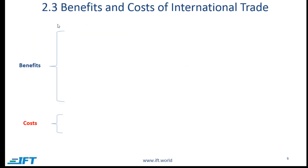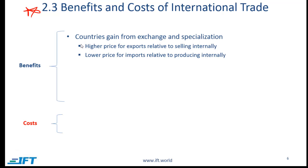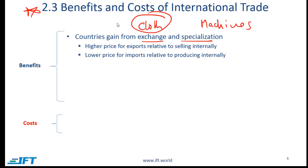Moving to section 2.3, benefits and costs of international trade — this is quite testable, so you need to remember both. The big benefit of trade is that countries gain from exchange and specialization. If a given country is good at producing cloth and another at producing machines, it makes sense for the cloth-producing country to specialize and export cloth, while the machine-producing country focuses on machines and exports them.